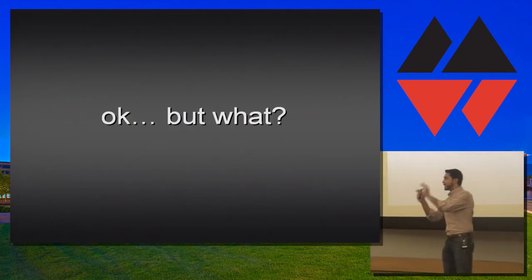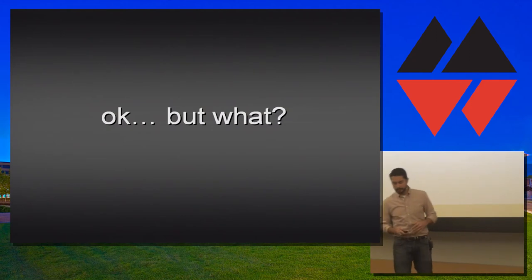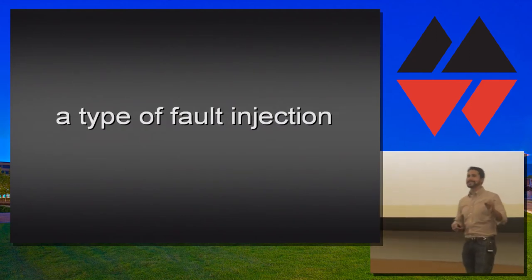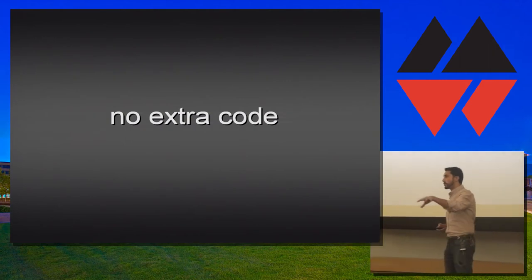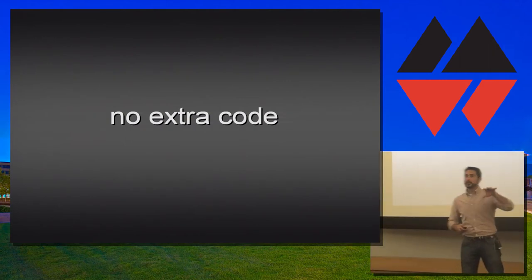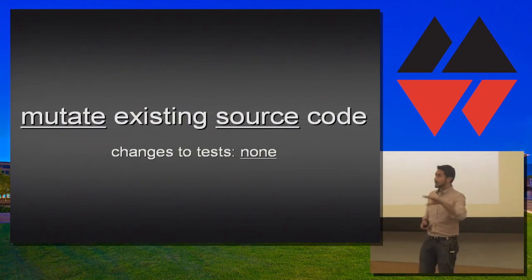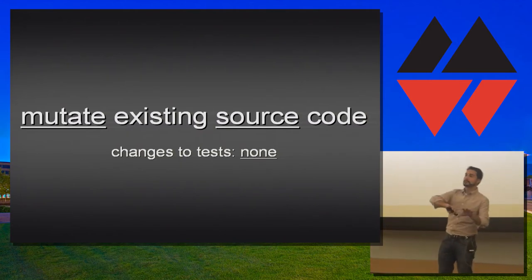So, there's mutation in the name mutation analysis, but what do we mutate? Mutation analysis is a type of fault injection. When we don't introduce new code, although we could, we actually change what's already there. We mutate the existing source code, and we leave our tests unmodified, because we're going to test our tests. It's kind of meta, right?